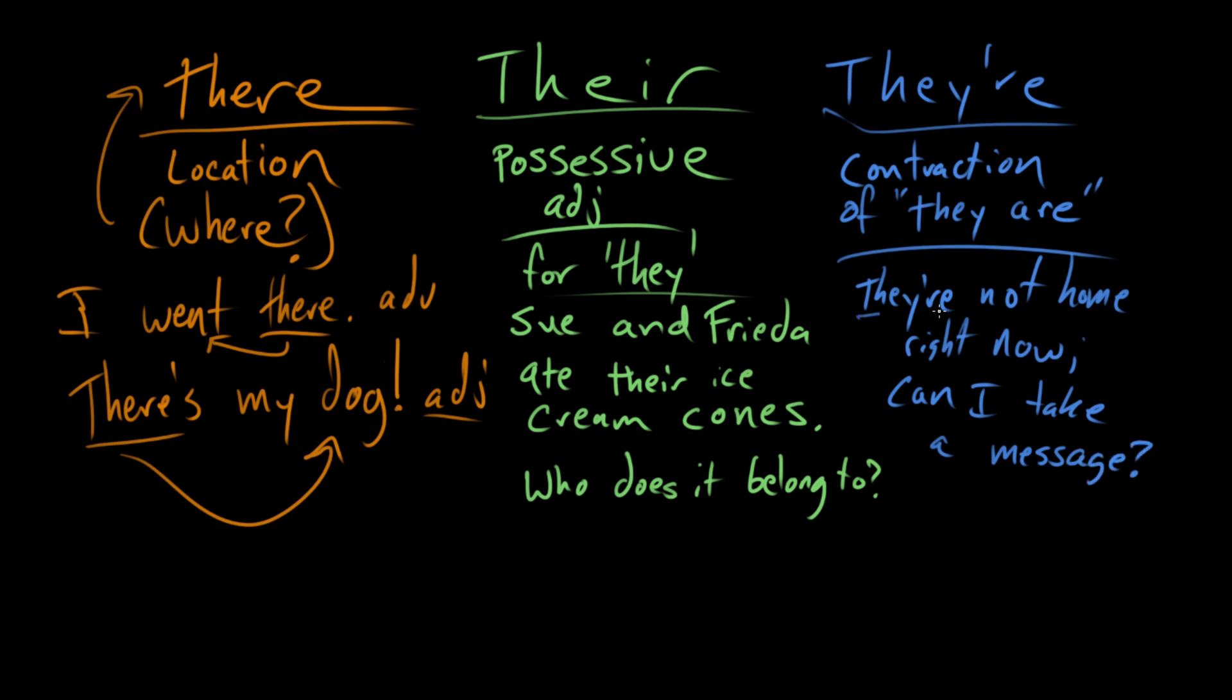So you can see in this sentence, they're not home right now, can I take a message? They're, T-H-E-Y apostrophe R-E, is replacing they are. Both of these things would work equally well in the sentence. They're both grammatical, one's just shorter.